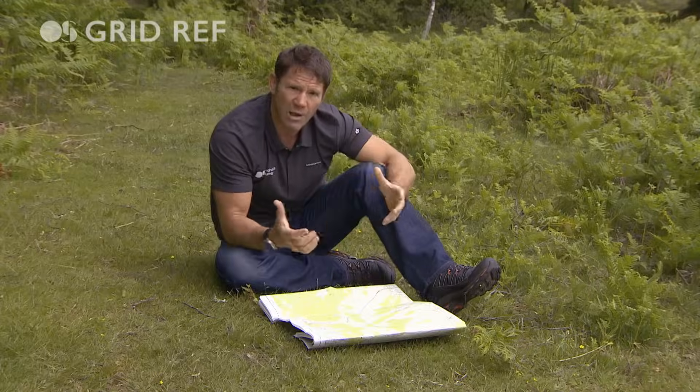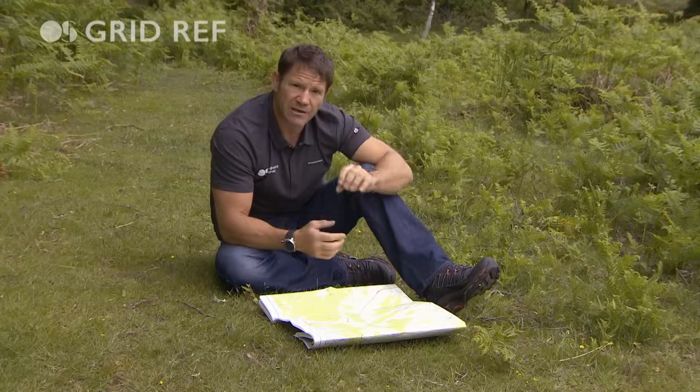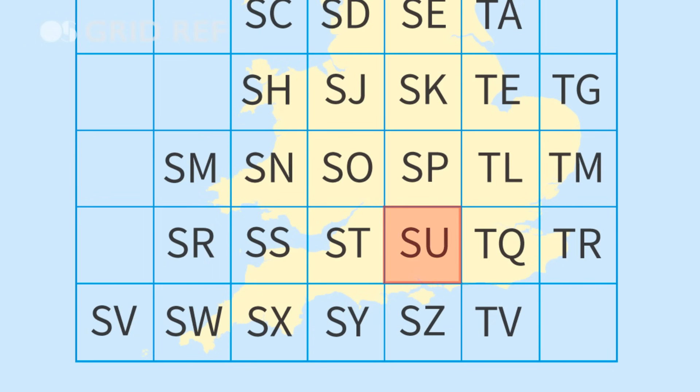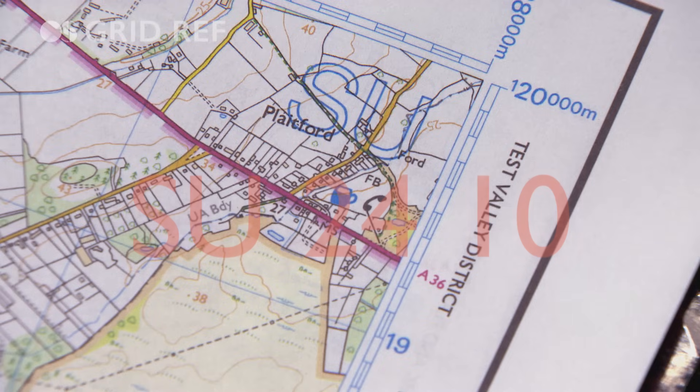One last extra: each map has a special prefix which tells you which part of Britain you're in. So here I'm at SU 2410.